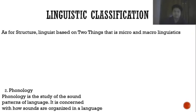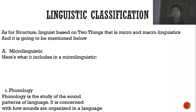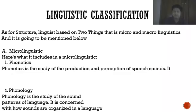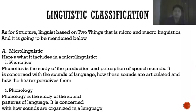Regarding linguistic classification, linguistics is structured based on two things: micro linguistics and macro linguistics. First is micro linguistics. It includes phonetics — the study of the production and perception of speech sounds, concerned with the sounds of language, how these sounds are articulated, and how the hearer perceives them. The second branch is phonology — the study of sound patterns of language, concerned with how sounds are organized in language.